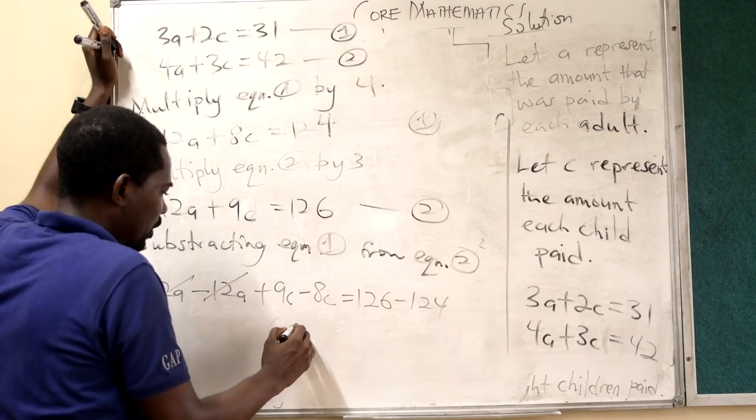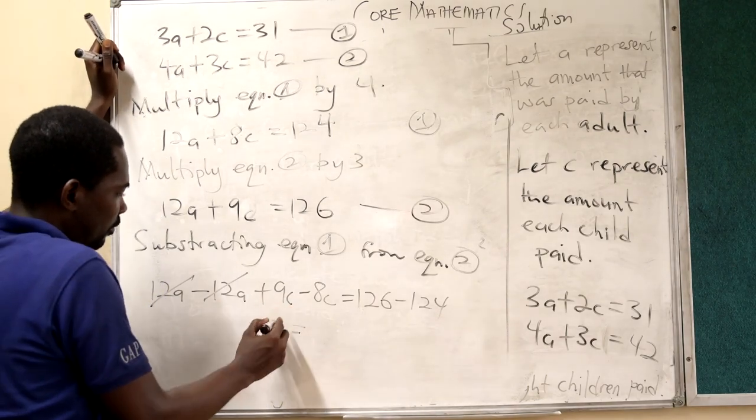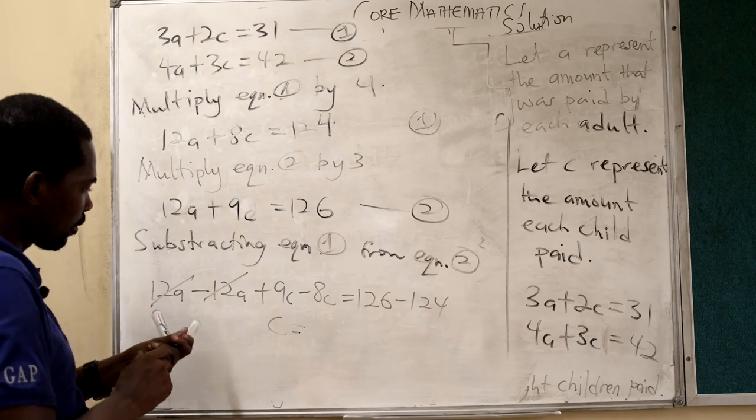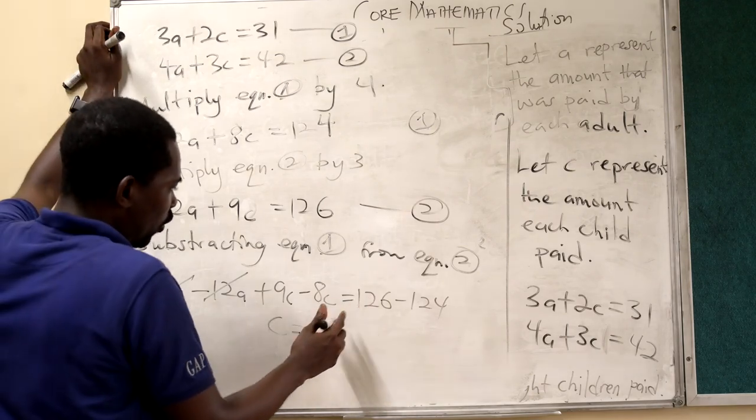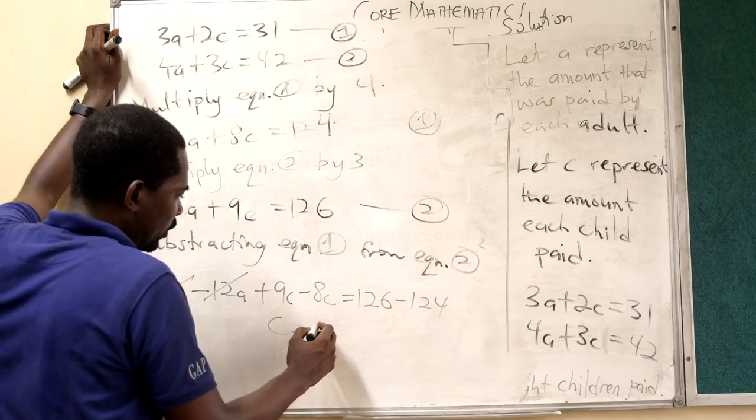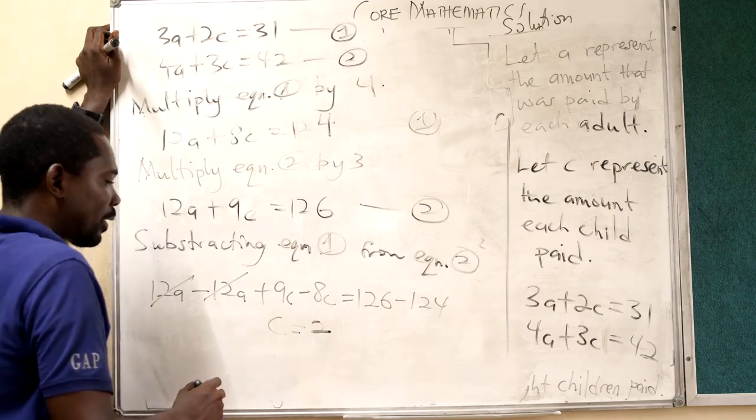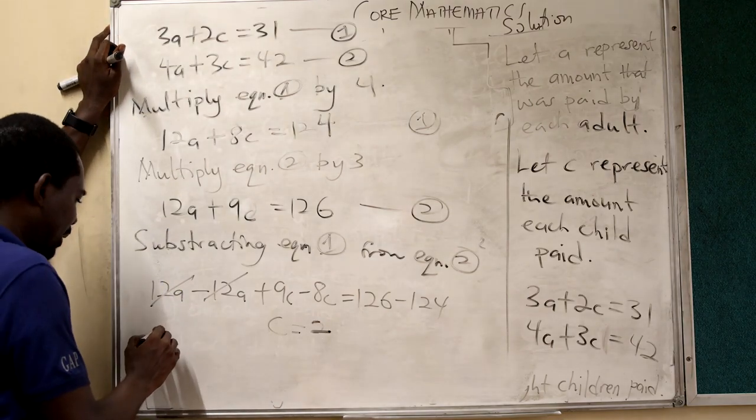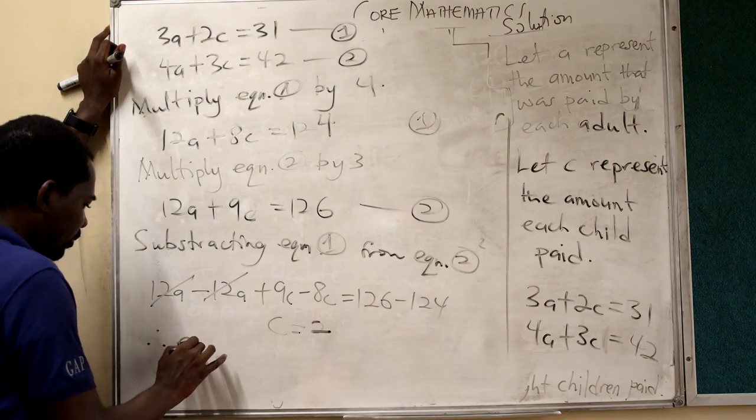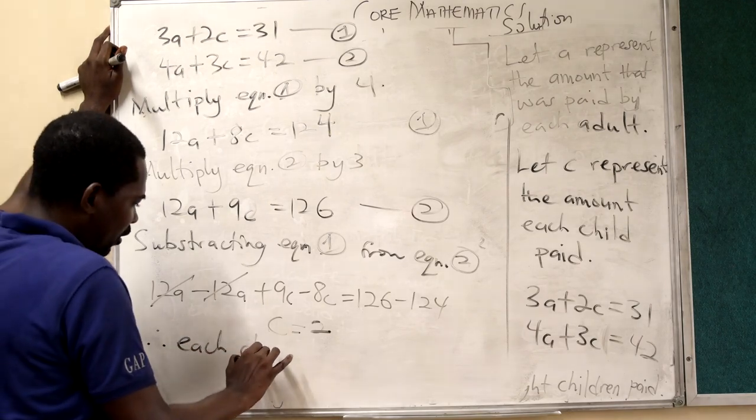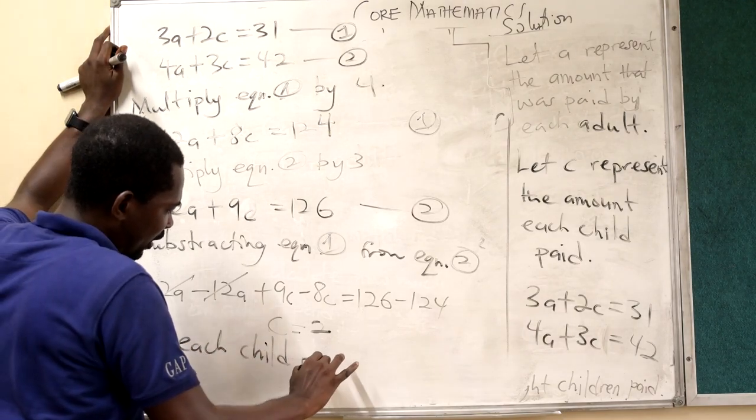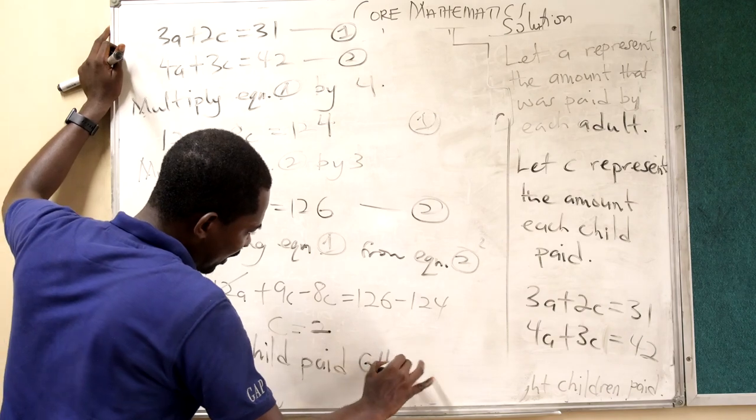9C minus 8C is equal to C or 1C. 126 minus 124 is equal to 2. So this is exactly. Therefore,